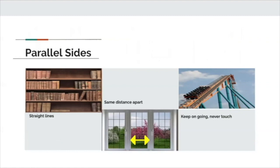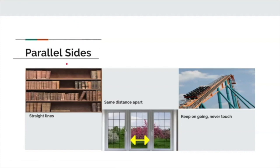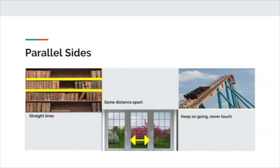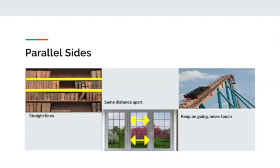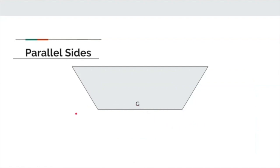Another attribute that some shapes have are parallel sides. If you look here, there's a line above and below the title. If they keep moving forward, they're never going to touch. Some characteristics of parallel sides are that they are straight lines. Also, they have the same distance apart — the space between the top and bottom is going to be the same. Just like a roller coaster, these two lines keep going and will never ever meet.